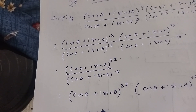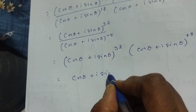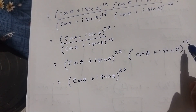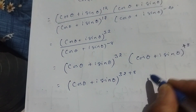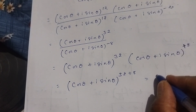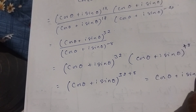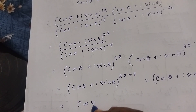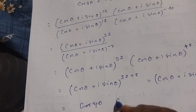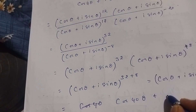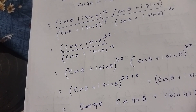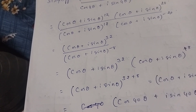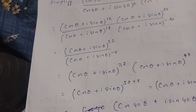You write one time cos θ + i sin θ with power plus 8 plus 32, which equals cos θ + i sin θ to the power 40. This is the answer we got. I hope you understood how to solve De Moivre's theorem. Thank you for watching my video. Please like and subscribe to my channel.